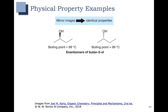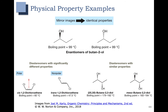In our first example, we have a pair of enantiomers where the stereochemistry of this position is flipped, and we have the same boiling point — you can't tell them apart based on their boiling point. Down here, we have some examples of diastereomers. On the left, these diastereomers have very different physical properties: a boiling point of 60 degrees compared to 47.5 degrees, and one molecule is polar while the other is nonpolar. The diastereomers on the right, however, have similar boiling points, so it would be hard to tell the difference based on boiling point alone.